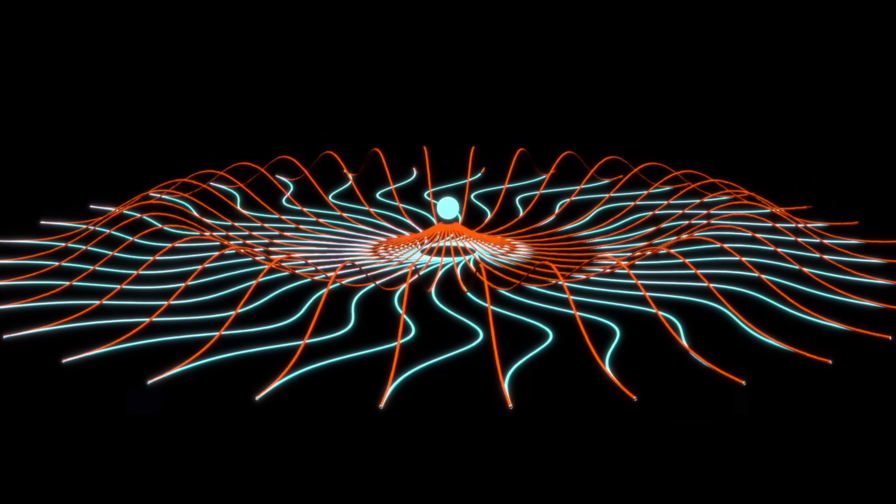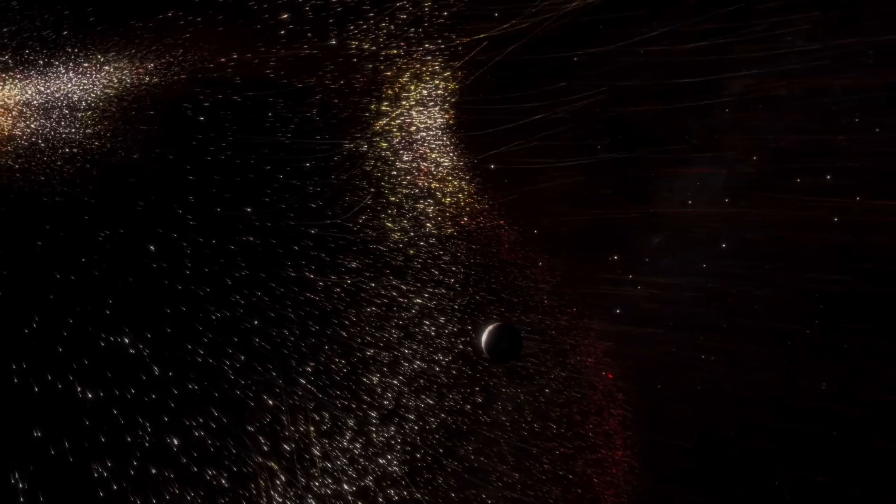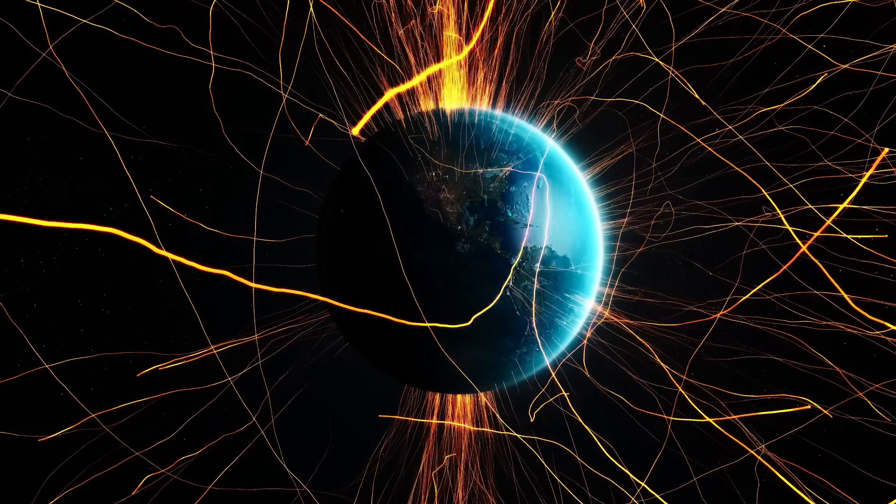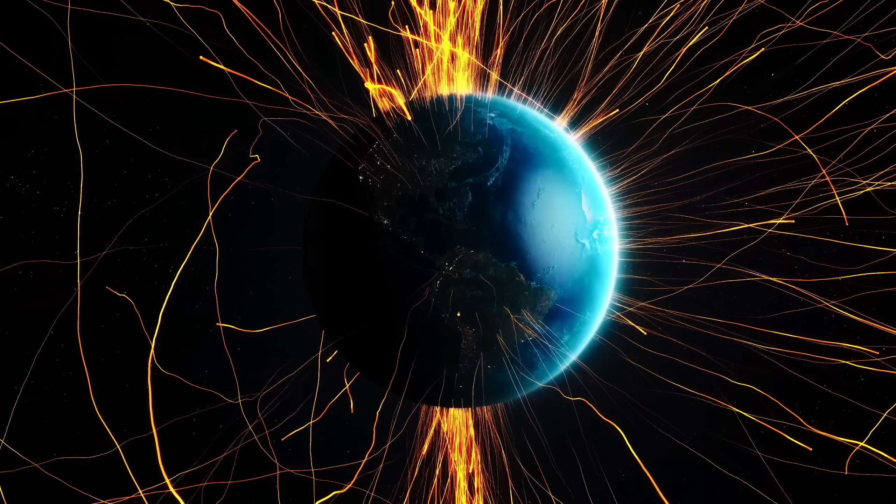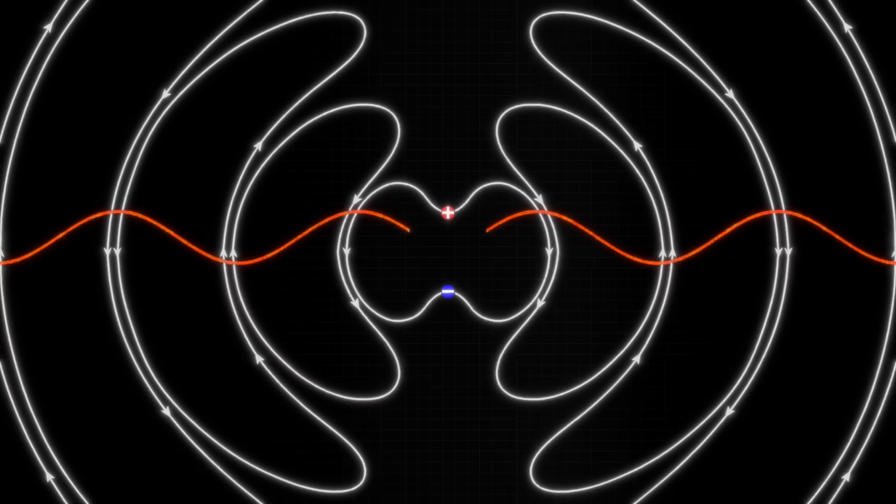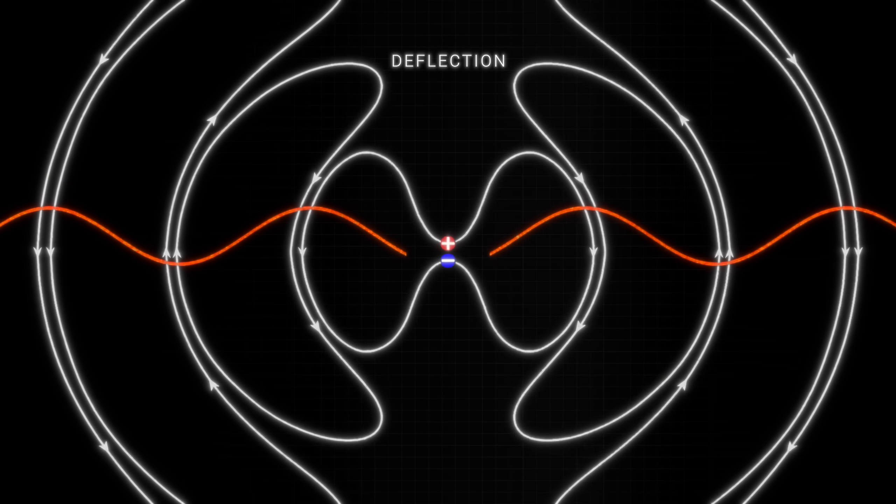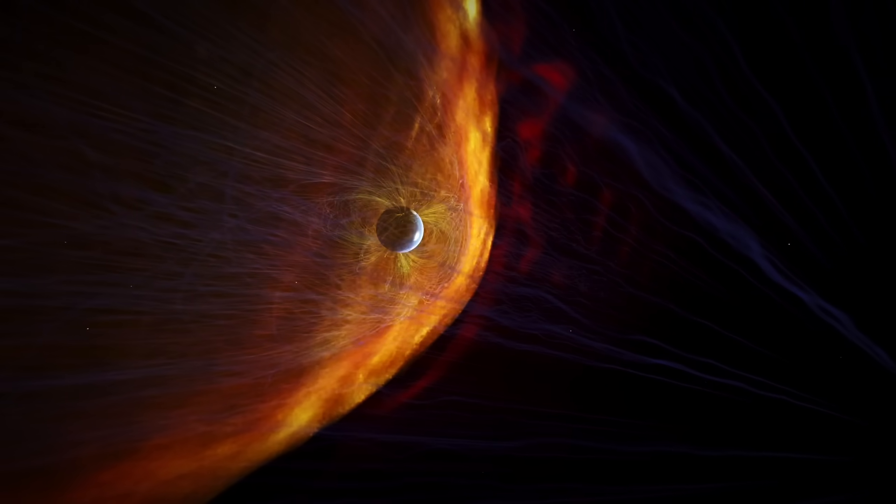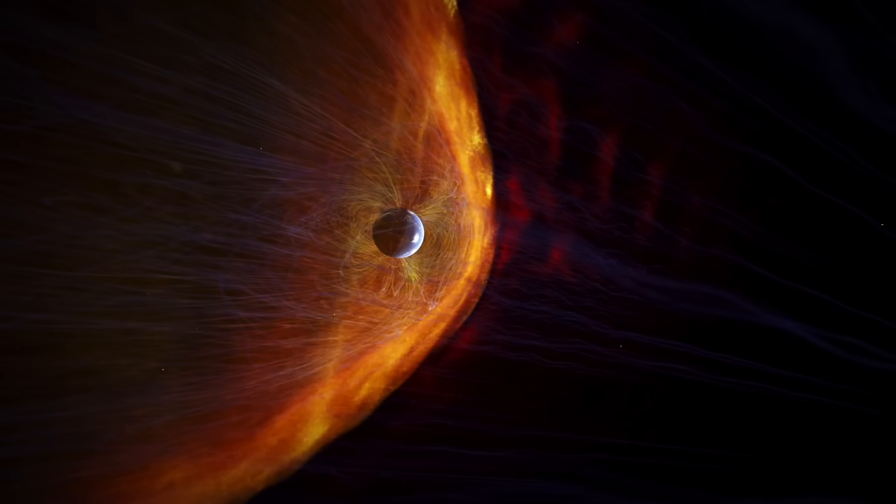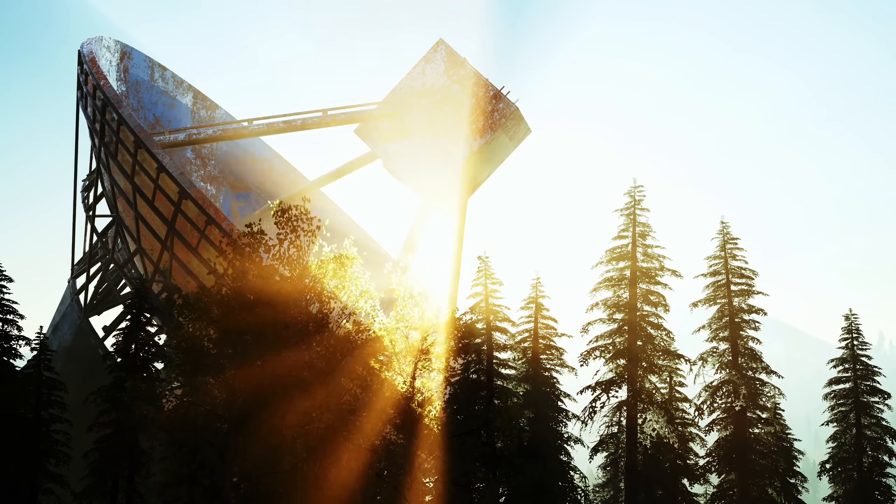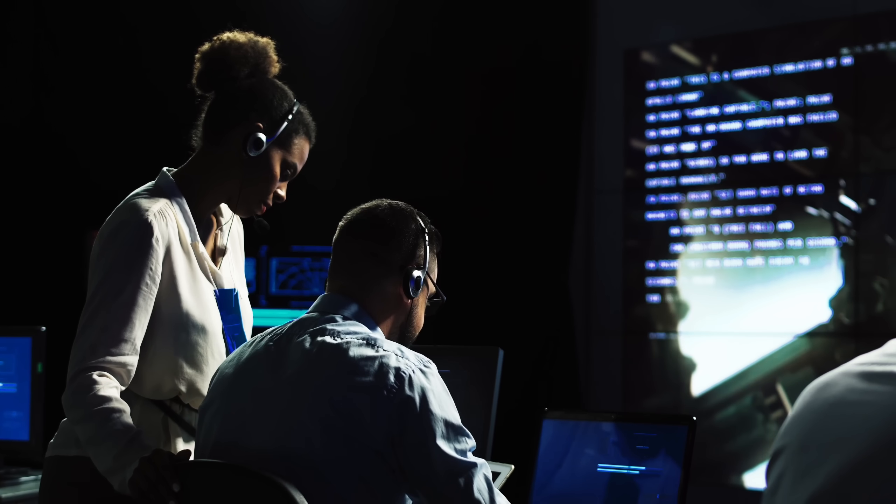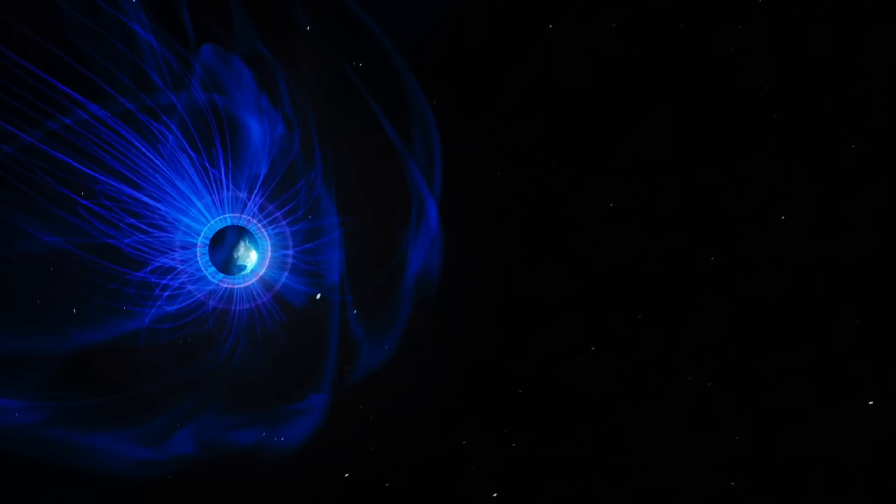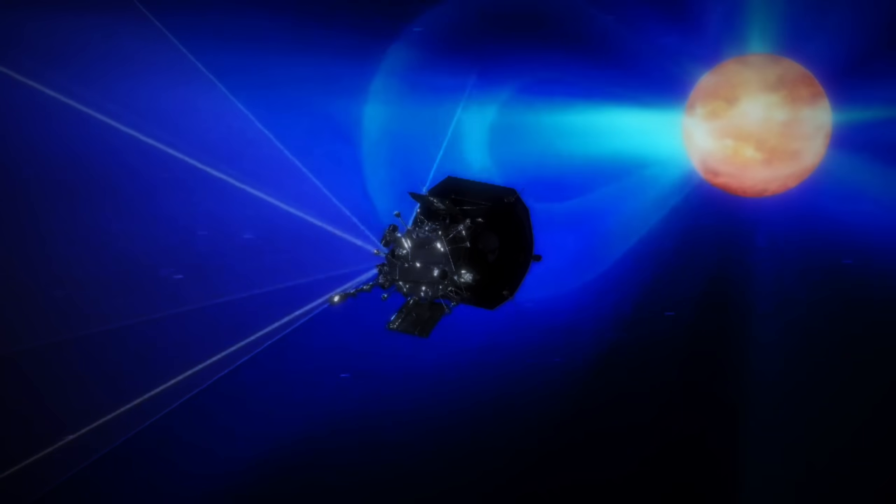To understand this, we need to delve a little deeper into the nature of radio signals and magnetic fields. Radio signals are a type of electromagnetic wave, which means they are composed of oscillating electric and magnetic fields. These fields can interact with other magnetic fields they encounter as they travel through space. When a radio signal passes through a magnetic field, it can be altered in various ways. Its direction can be changed—a phenomenon known as deflection.